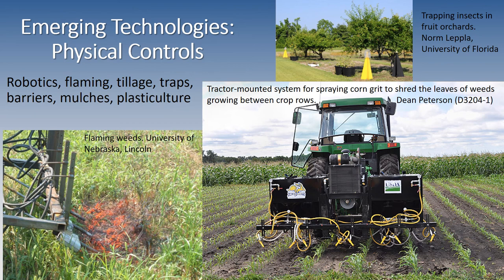Physical controls can play a very important role. Those include robotics, flaming of weeds, tillage, traps, barriers, mulches, and plasticulture. On the left we have a demonstration of flaming weeds from the University of Nebraska. On the upper right we have traps in fruit orchards looking for insect pests, and the lower right image is a tractor mounted with a system spraying corn grit to shred the leaves of weeds growing between the crop rows.